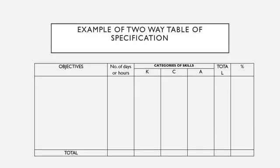Here is a simple example of a two-way table of specification. Remember that for each institution, they may have a different format. For the first column, we have the objectives. Then we have for the second column, the number of days or hours spent in teaching the different objectives or contents. And for the next three columns, we have the categories of skills. These categories will differ depending on the type of skills that the teacher wants to assess in his or her students.